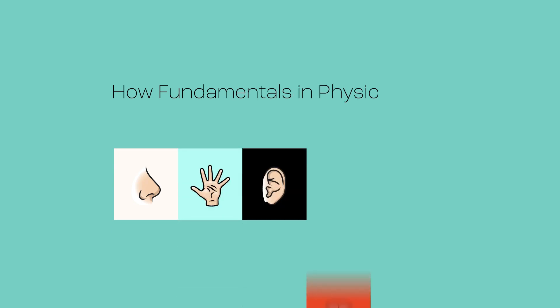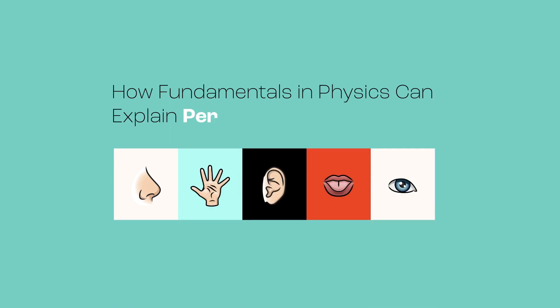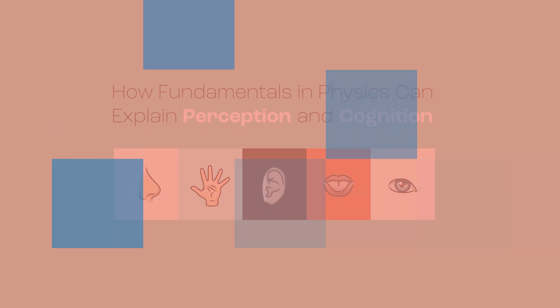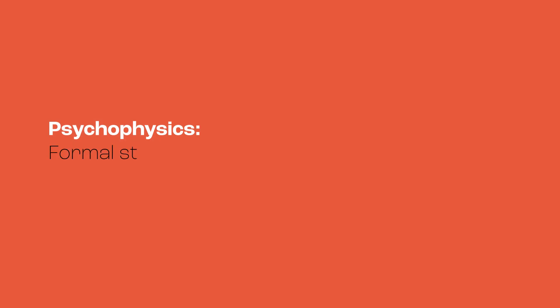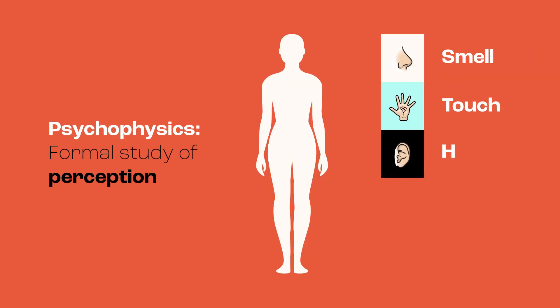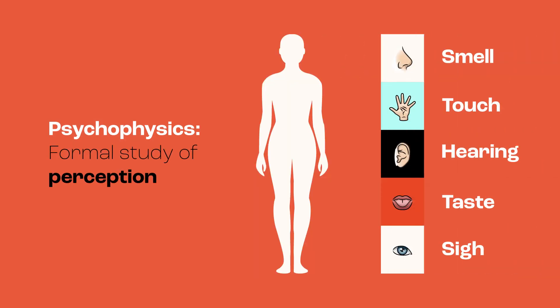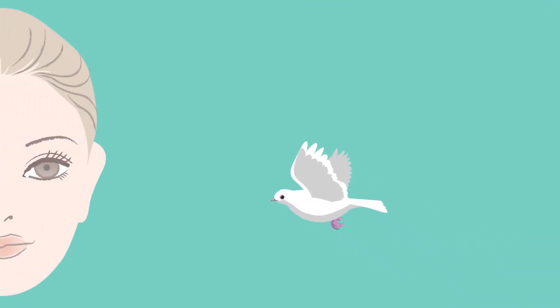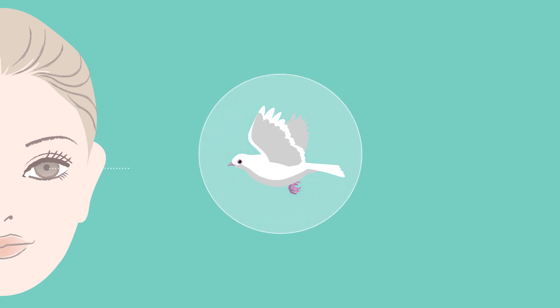How Fundamentals in Physics Can Explain Perception and Cognition. Psychophysics is the formal study of perception, our sensory experience of the world. More than 150 years ago, Gustav Fechner defined a percept as the mental event that results from a physical object being analyzed by the brain through the detection of specific features.